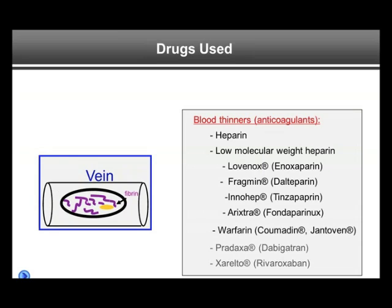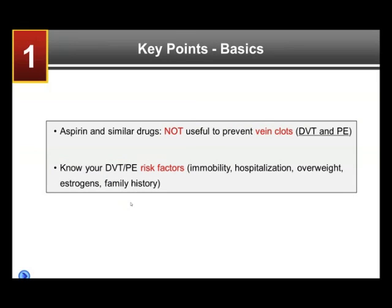On the venous side, the clot is mainly made up of fibrin with only occasional platelets. So anti-platelet agents would not do very much to prevent blood clots in the veins — DVT and PE. Aspirin and Plavix are not used for prevention of DVT and PE, and it is likely not effective to take an aspirin before long-distance airline travel thinking it would protect you from DVT or PE. What is needed to prevent or treat DVT and PE are blood thinners — the anti-coagulants: heparin, low-molecular-weight heparins such as enoxaparin or Lovenox, and the oral agents warfarin (Coumadin/Jantoven), Pradaxa, and Xarelto. These prevent fibrin from forming and are the mainstays of treatment and prevention of DVT and PE.